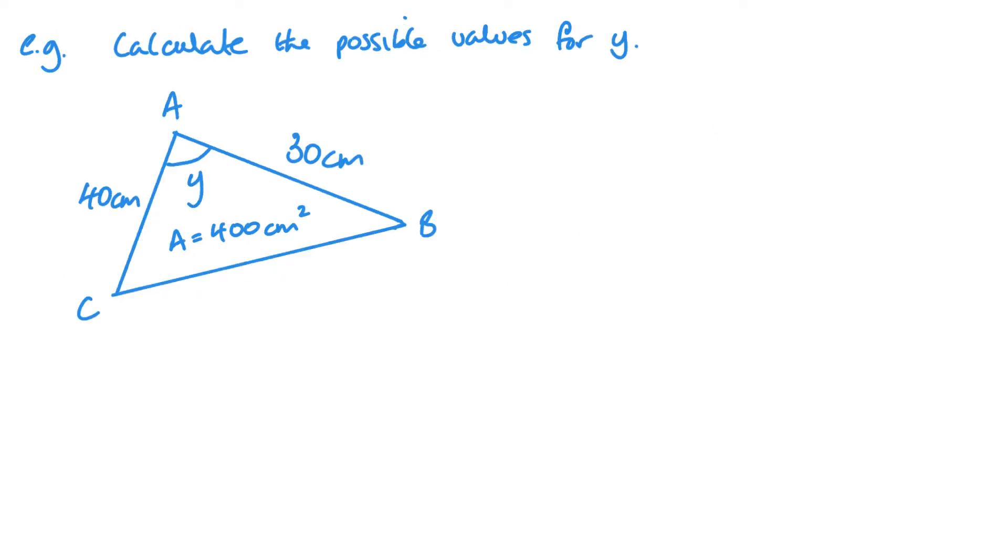Now, this example is slightly different. We've given the area and the two sides and we need to find the angle that's in between them. So again, I'm going to start off by labelling my triangle: A, C, and little B.